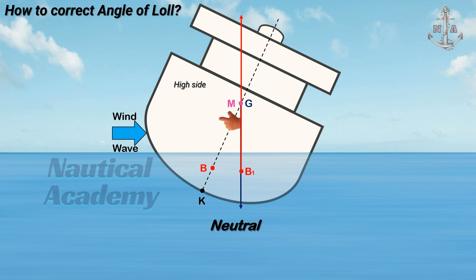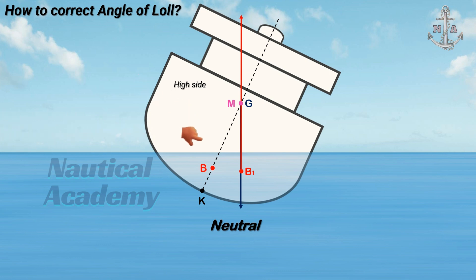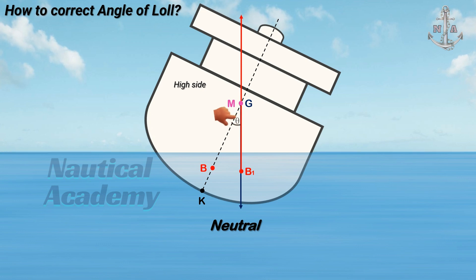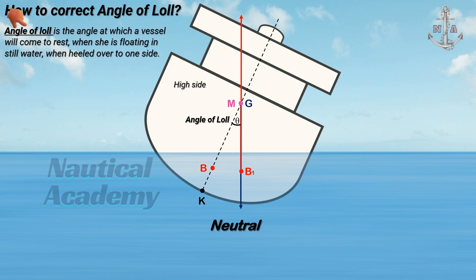She will remain inclined unless acted upon by external forces. In this state, the ship is in a neutral condition, where the metacenter coincides with the ship's center of gravity. In this condition, she will remain inclined at a certain angle, known as the angle of loll. Angle of loll is the angle at which a vessel will come to rest when she is floating in still water, heeled over to one side.